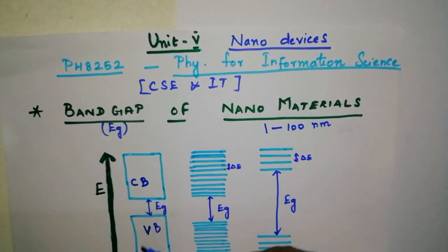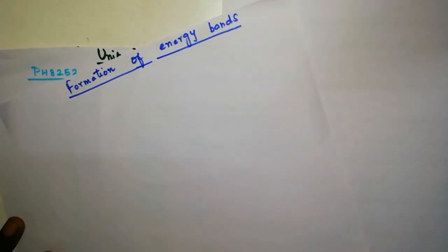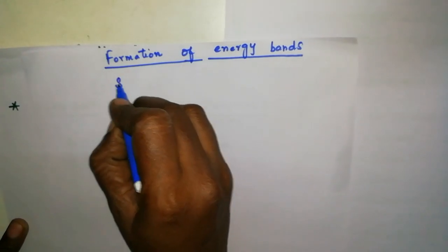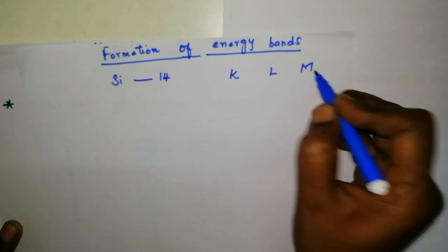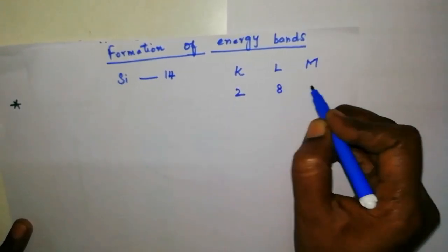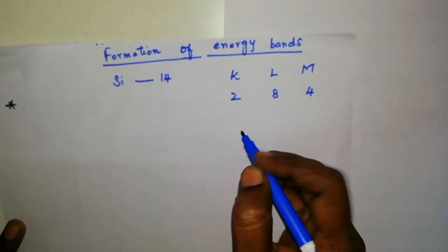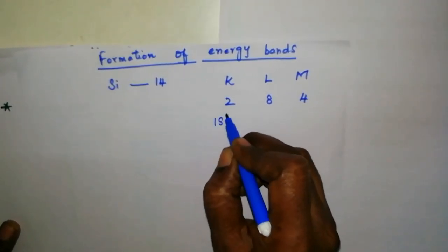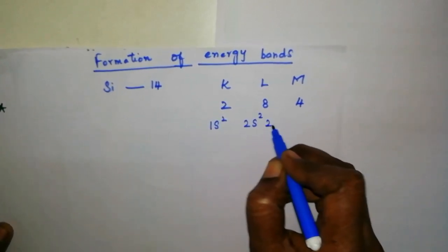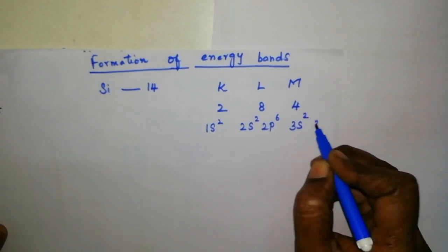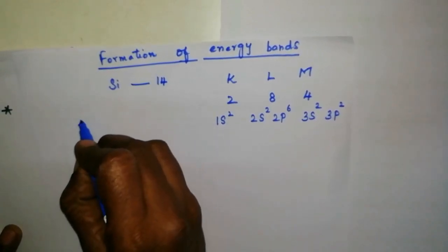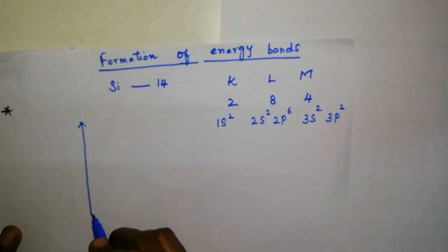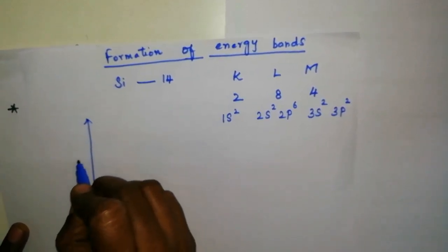How energy bands are formed? For simplicity and better understanding, let us consider an isolated silicon atom. The atomic number of silicon is 14. The 14 electrons are distributed in the K, L, M shells as 2, 8 and 4 respectively. The electronic configuration can be written as 1s2, 2s2, 2p6, 3s2 and 3p2.